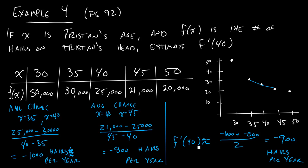Which basically means when he was 40 years old, he was losing about 900 hairs per year. So just big idea, the derivative is the instantaneous rate of change at a certain point. The way we represent that instantaneous rate of change graphically is with a tangent line. The way we figure it out from an equation is we just pick two points that are really close together. And then the way we can do it from a table is we'll look at the average rate of change on the right side, we'll look at the average rate of change on the left side of the point they're asking us about, and we'll take the average of those two quantities that we computed.